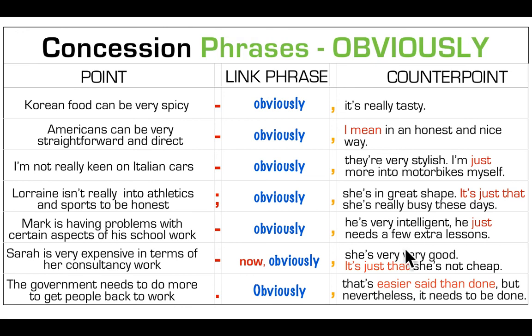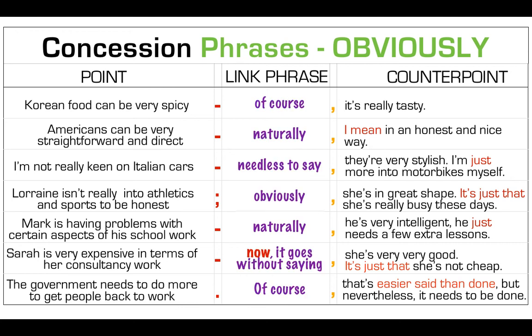So those are some nice concession phrases using 'obviously.' Don't forget these partnering phrases: 'I mean,' 'I'm just,' 'it's just that,' 'easier said than done' — these are added as extra sugar to quickly clarify that you're trying to be diplomatic. Now, some options for 'obviously': you could say 'of course,' 'naturally,' 'needless to say,' or 'it goes without saying.'